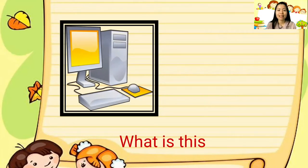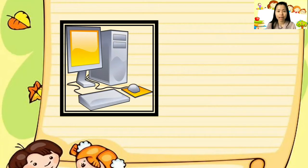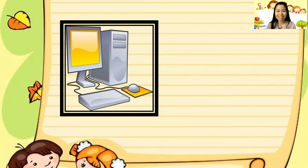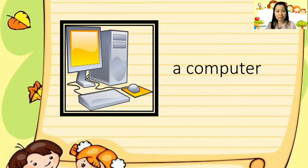What is this? This is a thing we use when we look for places or things that we can't see around us or far from us. It has a CPU and monitor. Can you tell me this thing? Right — most of us have this thing at home. Can you say 'a computer'?